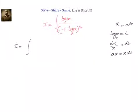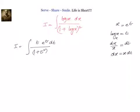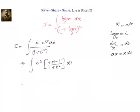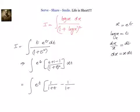The given problem becomes I equal to integral of log x, which is t, divided by 1 plus log x whole square, which is 1 plus t whole square, and dx equals e power t dt. We can write this as t plus 1 minus 1 divided by 1 plus t whole square, which equals e power t into 1 by 1 plus t minus 1 by 1 plus t whole square.